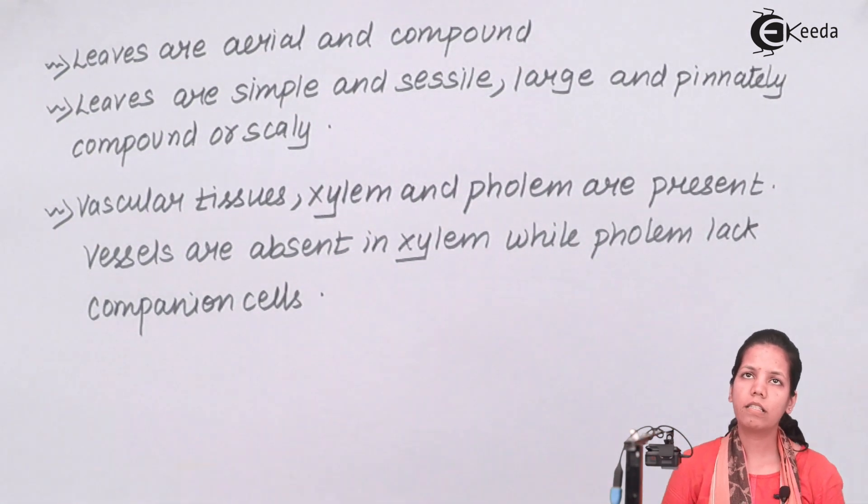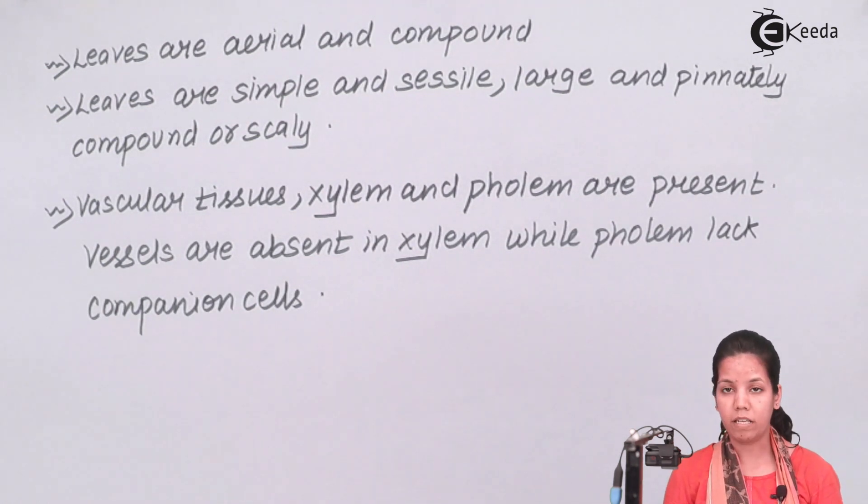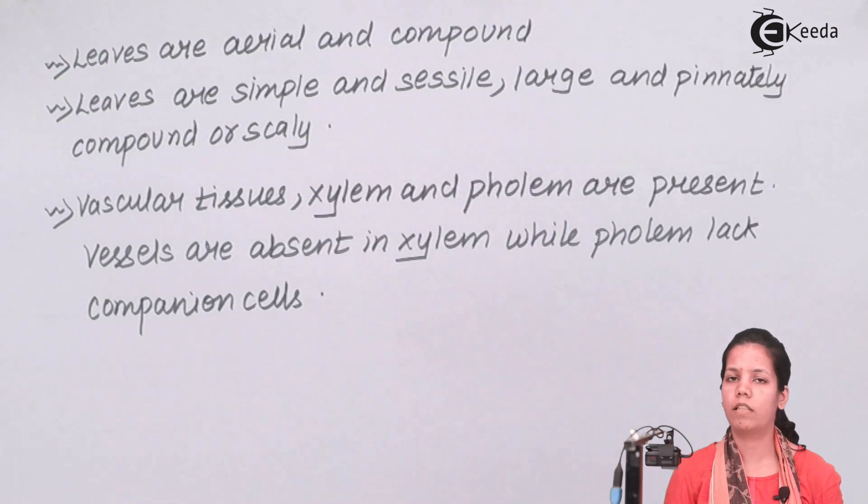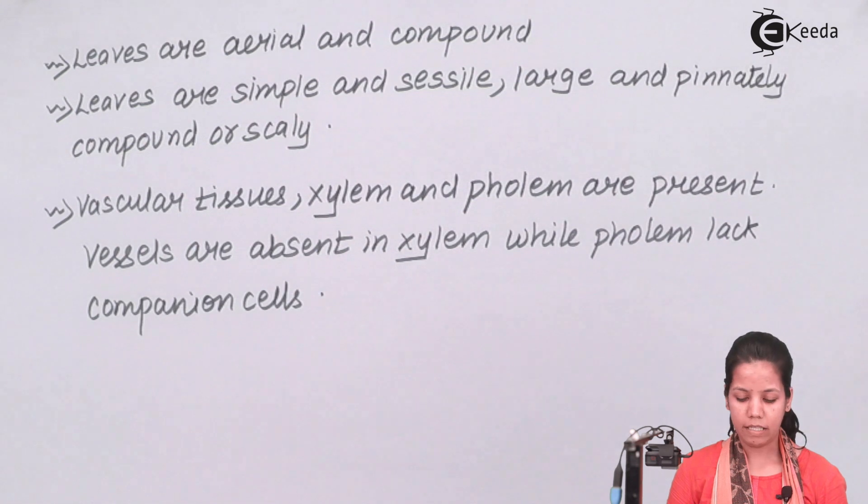Now vessels were the conducting vessels or tubes in the xylem while phloem lack companion cells. So we could simply say that maybe xylem and phloem is present in this but the xylem and phloem is not in so advanced form. That's basically vessels and companion cells are not present, whereas your normal plants or normal varieties of Kingdom Plantae whether it is your gymnosperms, angiosperms, dicots, monocots will have xylem and phloem with their vascular tissues that is companion cells and vessels.